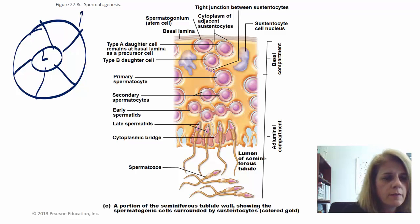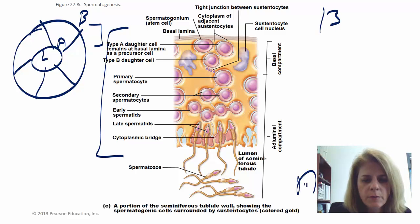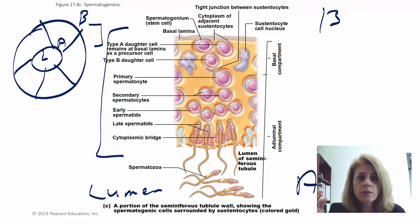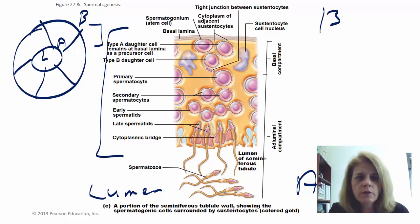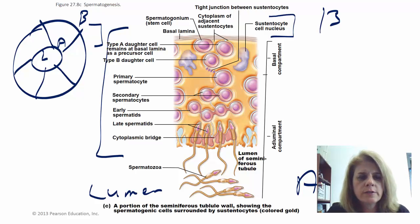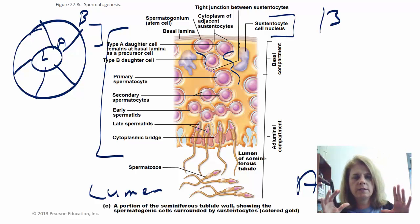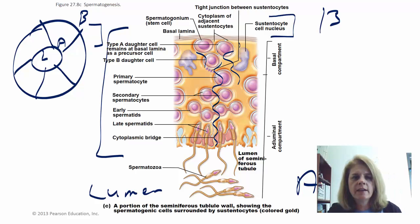Think back to when we talked about epithelial tissues and tubes. Anytime you have a tube you have a lumen, and cells that line this tube have a basal side and an apical side. I've blown up a section so you can see this. The sperm need to get out through the lumen of the seminiferous tubules to the epididymis, then to the vas deferens, and eventually out during ejaculation. All of this occurs between cells called Sertoli cells — the nursery cells.